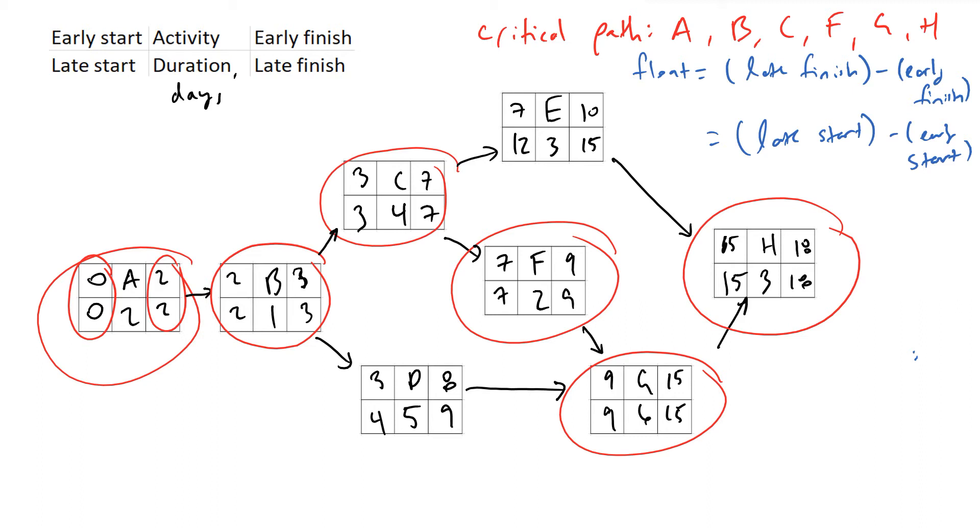And so in these cases, what we're going to do—if we take activity E—a question that you would get asked on an exam is: what is the float for E? Well, in our case, we would do the following. We would subtract the early finish from the late finish, and therefore float would be equal to... sorry, I'm getting ahead of myself... 15 minus 10, which is equal to 5 days.